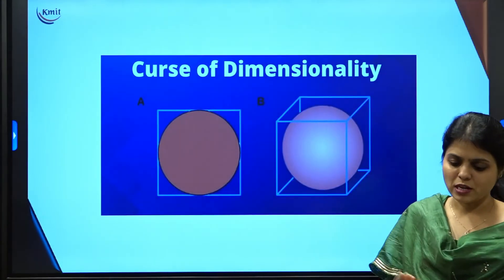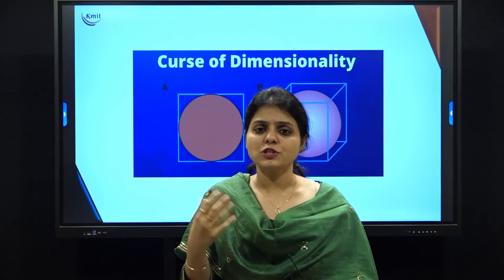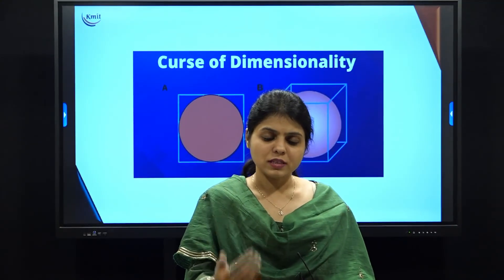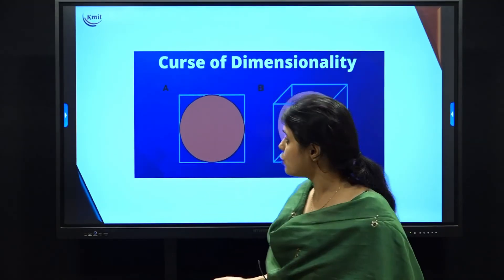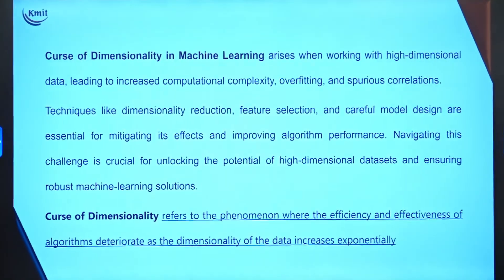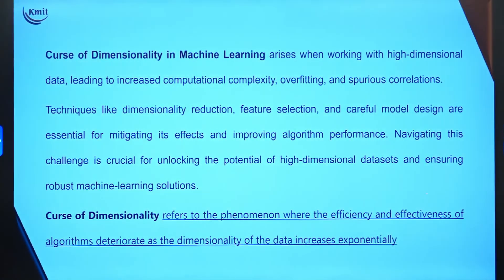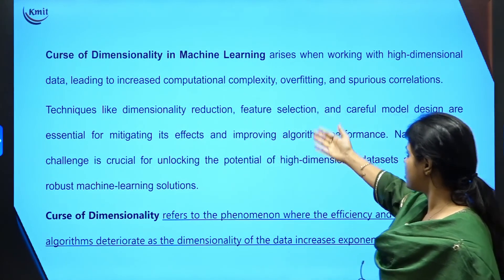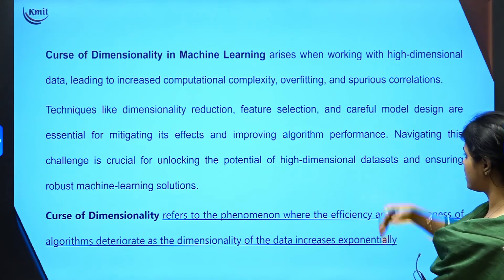To summarize: reducing the number of features without losing information is dimensionality reduction. However, when we work with high-dimensional data, a problem called the curse of dimensionality arises — leading to increased computational complexity, overfitting, and other problems. We address this using dimensionality reduction, feature selection, and careful model design.